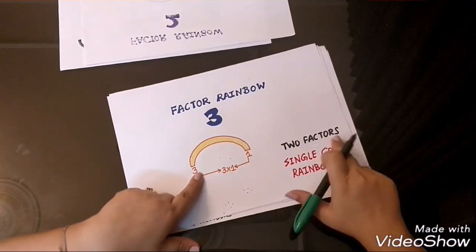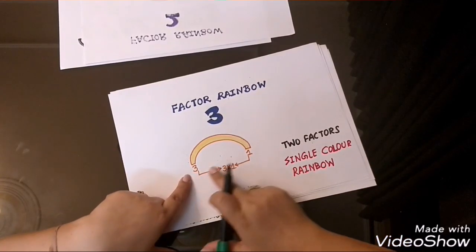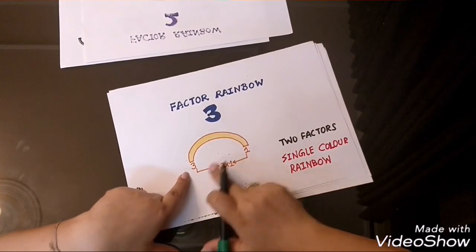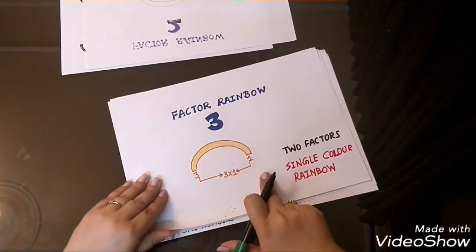So, again, 3 will also have only 2 factors. One is 3 and the other is 1. So, there are only 2 factors. So, again, it is a single color rainbow.